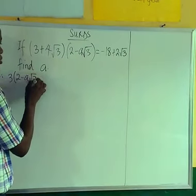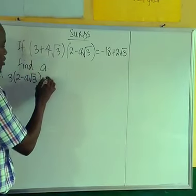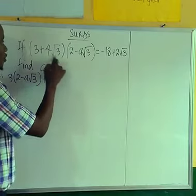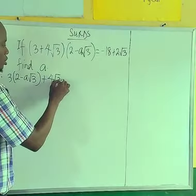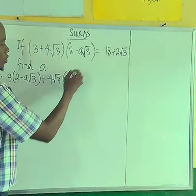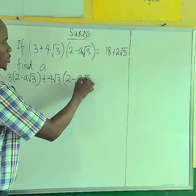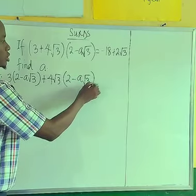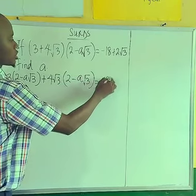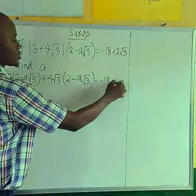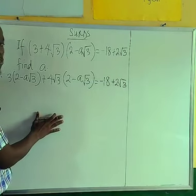We are going to multiply 3 by all of (2 - a√3), then take the second term 4√3 and multiply it by all of (2 - a√3), and that equals minus 18 plus 2√3.